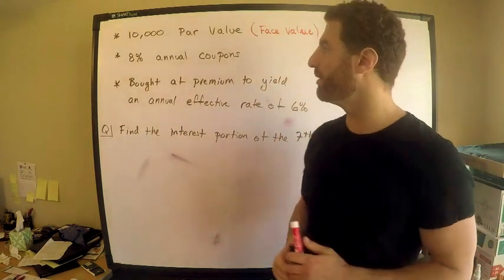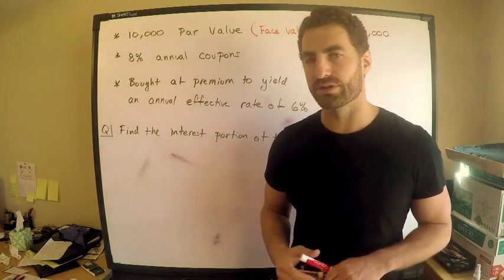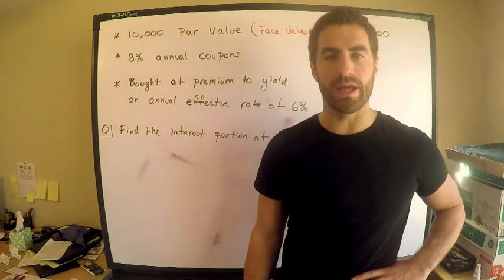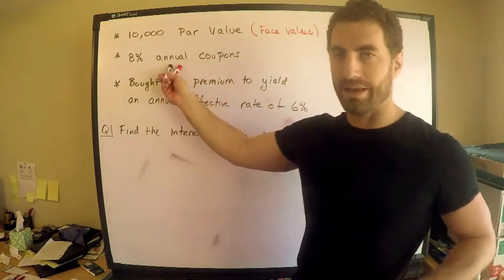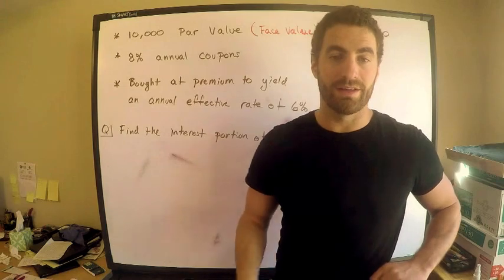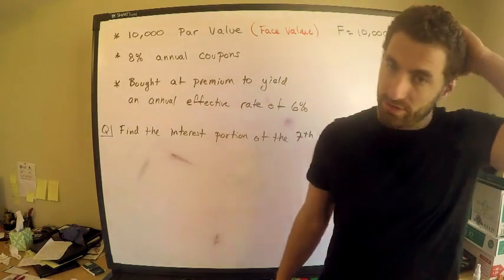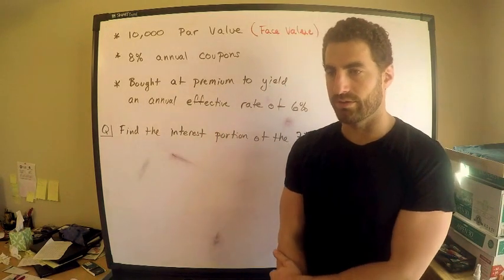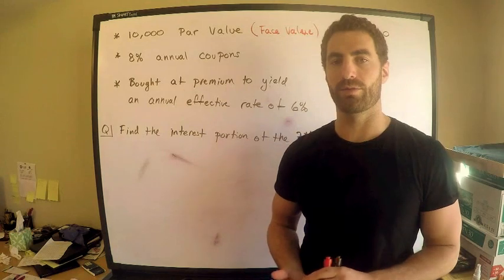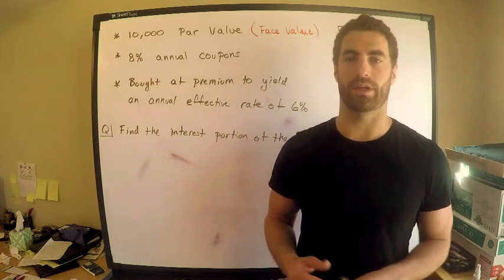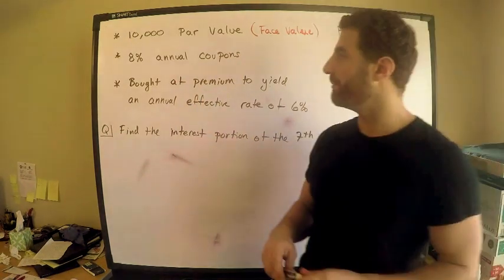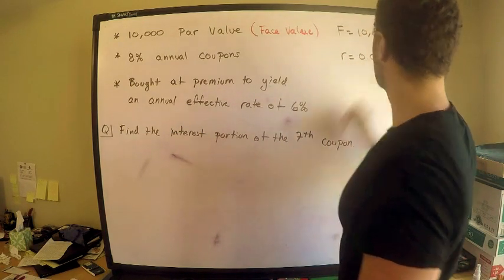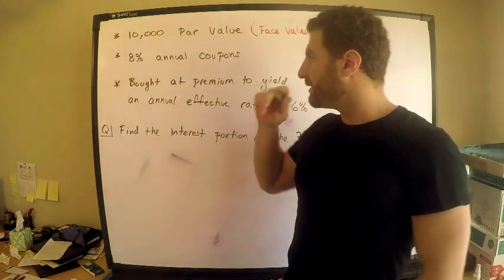We have 8% annual coupons. The coupon rate, which we call little r, is always associated with an annual rate, but coupons may be paid semi-annually, quarterly, or monthly — that's when they're actually paid, which can be a little confusing. Here they are paid annually, so we don't have to think about anything complex. The coupon rate r equals 0.08.